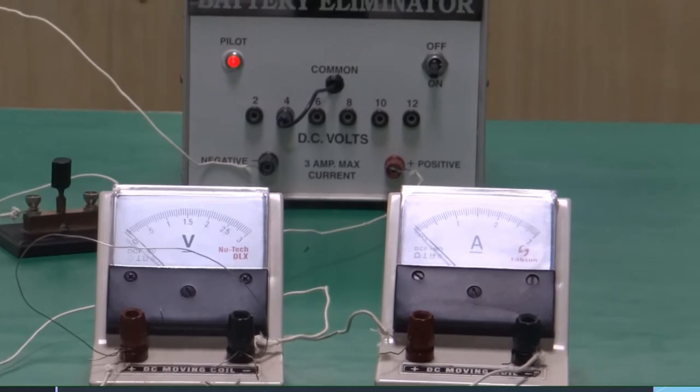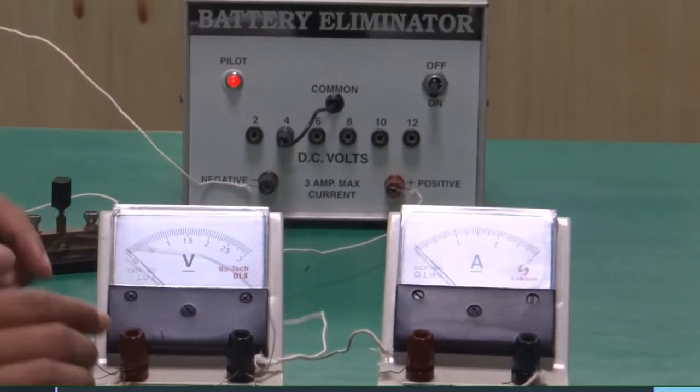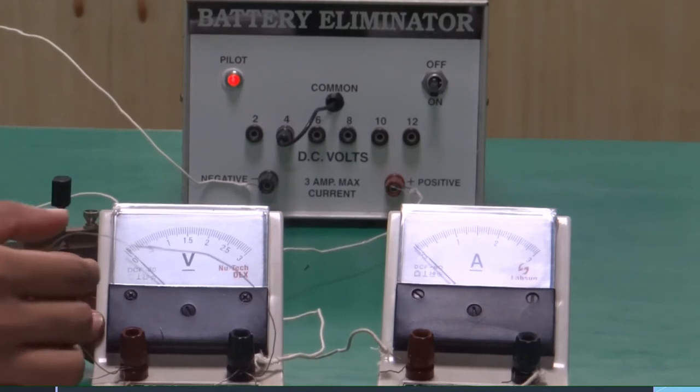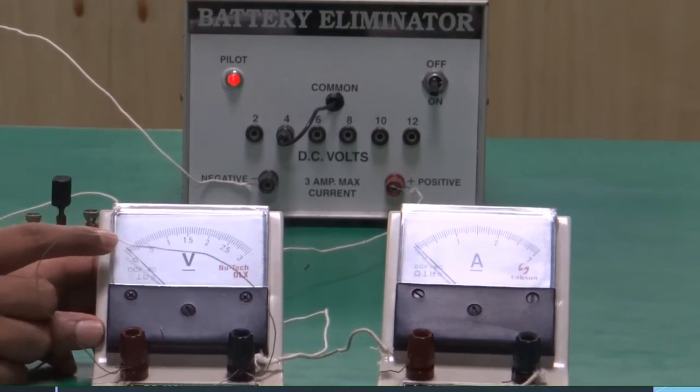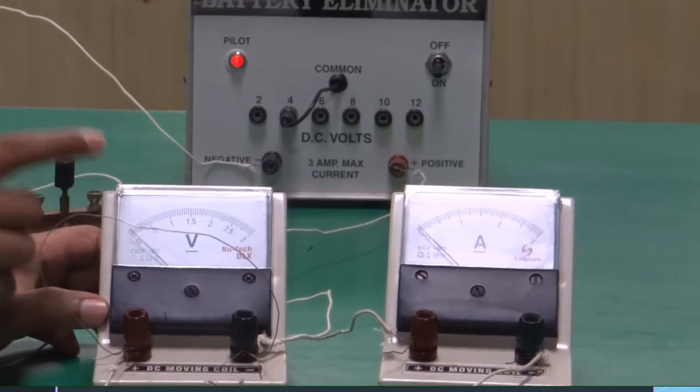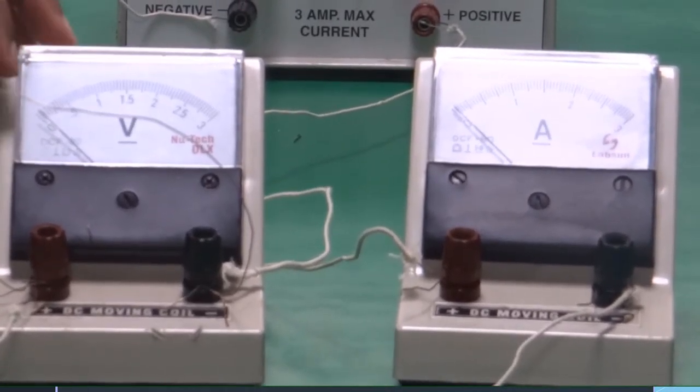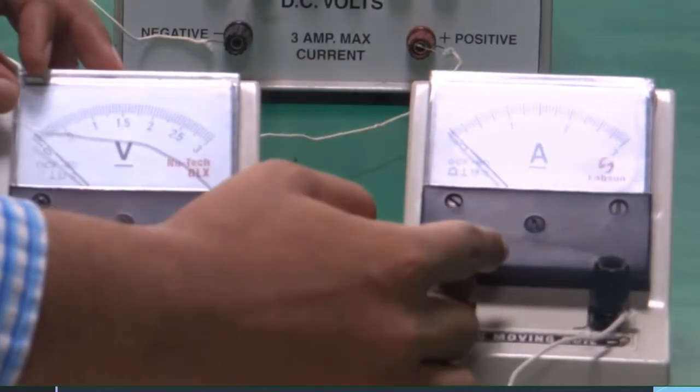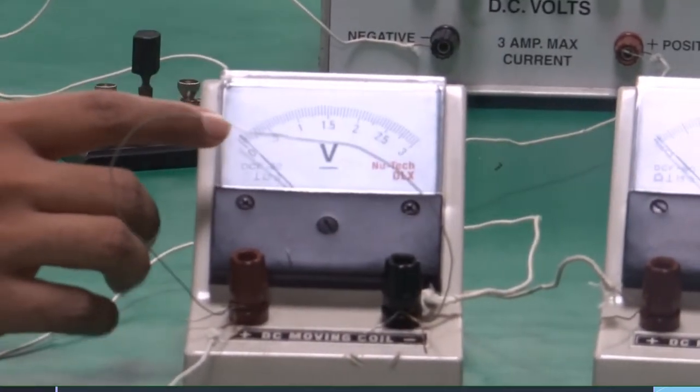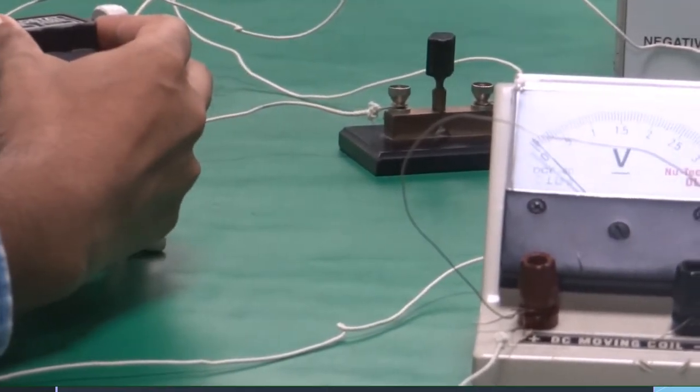Now you will take the readings. This is the resistance wire for which we are calculating the resistance. The least count of the voltmeter was 0.05 volts. So two divisions will make it 0.1 volts. To make your life easier, you will take the readings either by the voltmeter or ammeter. I will prefer to take readings from the voltmeter first. I will vary it so that it crosses two divisions.